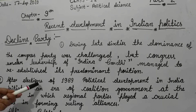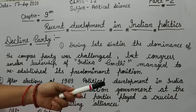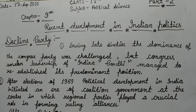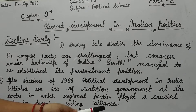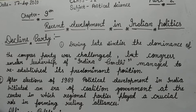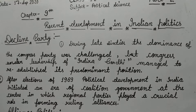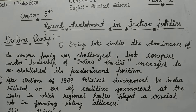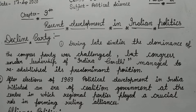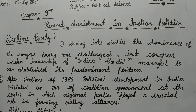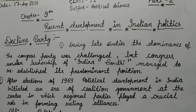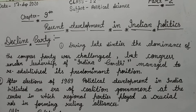After the election of 1989, political developments in India initiated an era of coalition government at the center, in which regional parties played a crucial role in forming ruling alliances. In 1989, the Congress party did not get votes in the majority, and many parties made alliances, leading to a coalition government.